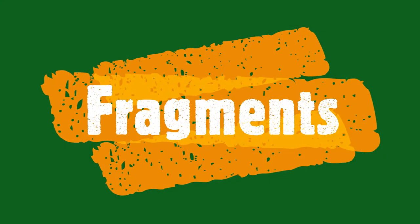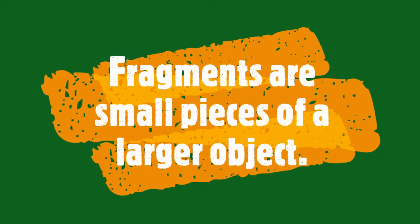This lesson is on fragments. Fragments are actually small pieces of a larger object. For example, if I held a large glass vase over my head and dropped it, it would burst into thousands of tiny pieces, also called fragments.